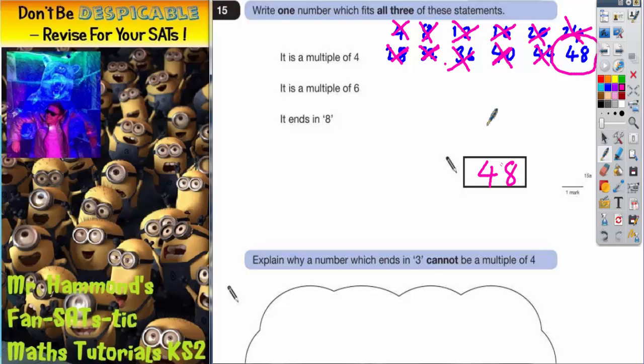48 is a multiple of four because it is 12 times 4. It is a multiple of six because it is eight times six. And it does end in eight because it is 48. So all three statements work out with 48.